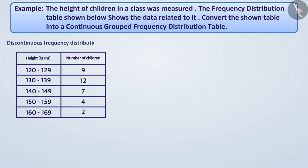The table shown below shows the discontinuous Frequency Distribution because the class intervals here are non-overlapping. That means there are gaps between upper and lower limits of two consecutive class intervals.